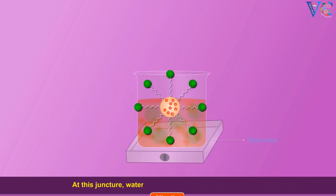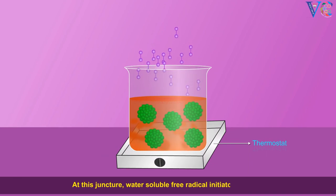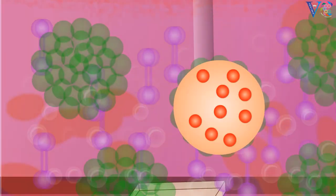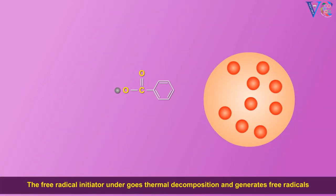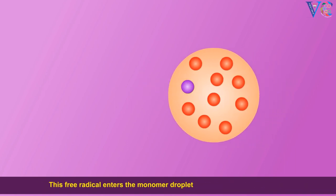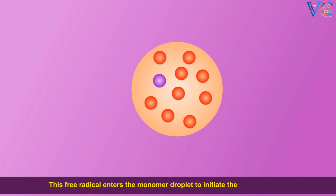At this juncture, water-soluble free radical initiator is added. The free radical initiator undergoes thermal decomposition and generates free radicals. This free radical enters the monomer droplet to initiate the polymerization.